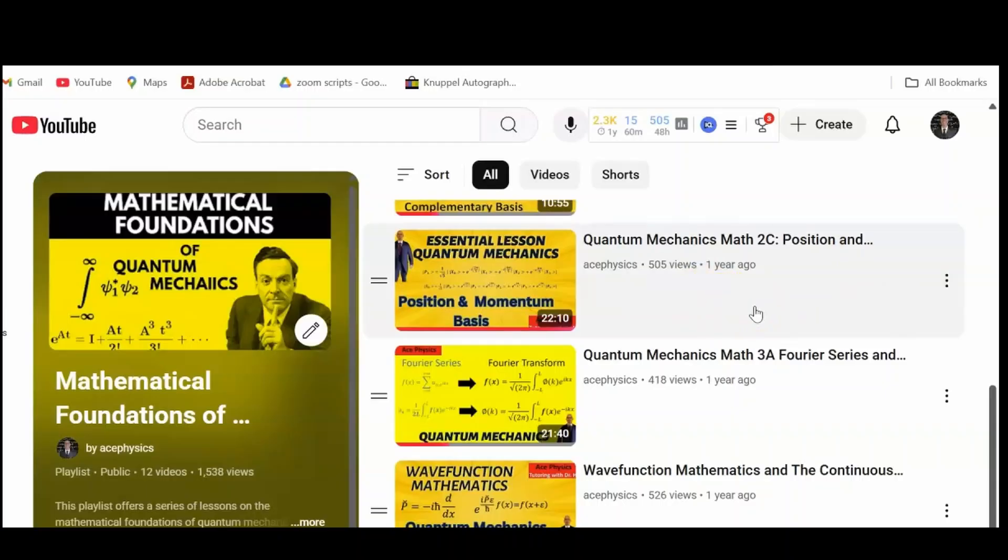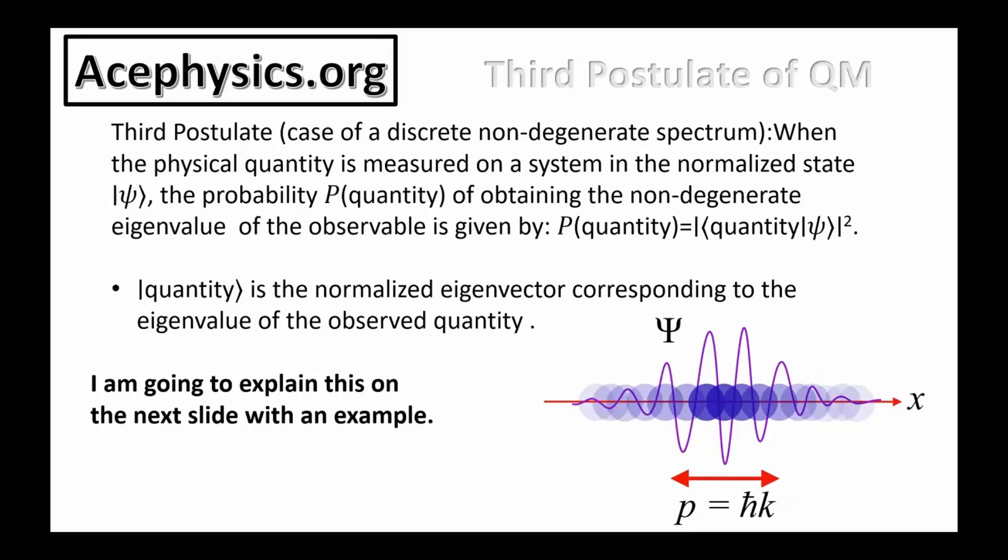And now let's discuss the third postulate of quantum mechanics. The textbook definition is as follows: When the physical quantity is measured on a system in the normalized state psi, the probability P of obtaining the non-degenerate eigenvalue of the observable is given by the inner product of the bra with a ket magnitude squared. The quantity that you're measuring, like the position or the momentum, is the normalized eigenvector corresponding to the eigenvalue of the observed quantity.